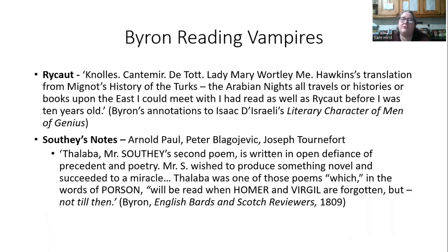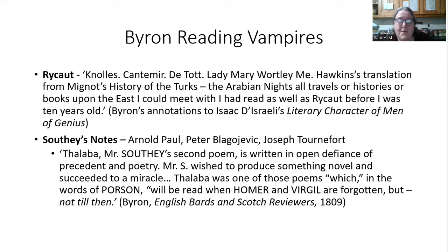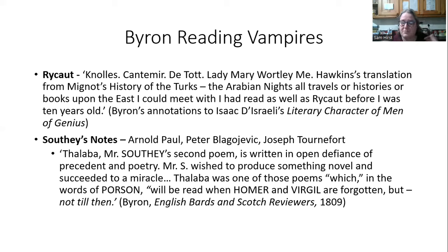Which of these accounts might Byron have been familiar with? There's a possibility he read Rycaut. In his annotations to Isaac Disraeli's Literary Character of Men of Genius, he talks about readings that inspired his many 'eastern' or 'oriental' writings, and he mentions Rycaut — often understood to refer to his writings on Turkey, but I don't think it's beyond possibility that this also refers to his writings on the Greek and Armenian churches, particularly given Byron's lifelong interest in Greece. He possibly had first-hand or second-hand knowledge of that account, as we see in reports coming out in 1823 or 1826, which give the history of the vampire and refer back to this Greek Orthodox excommunication idea.